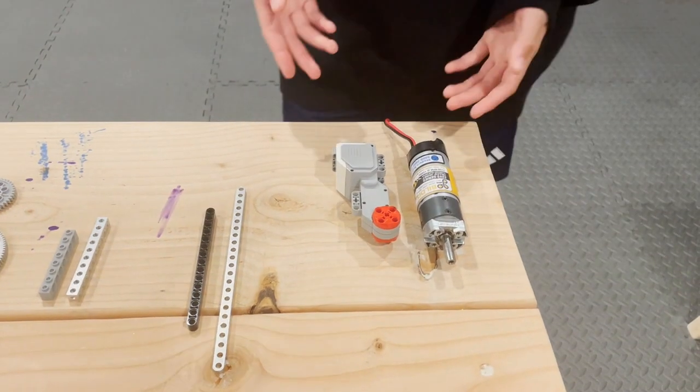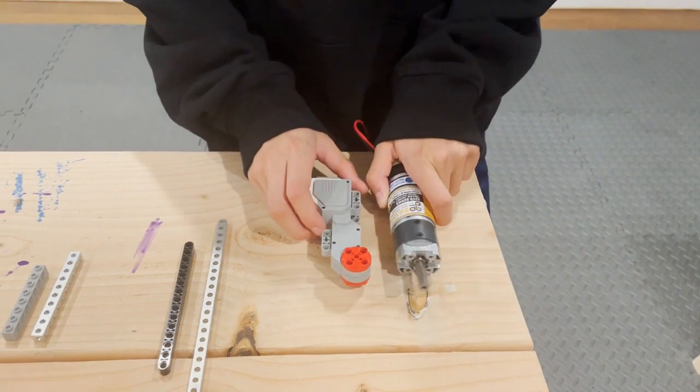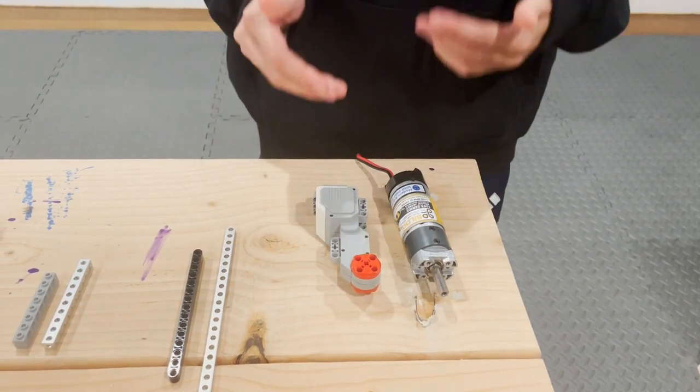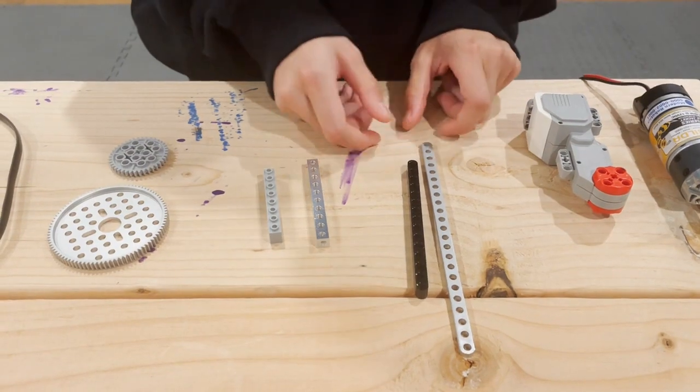First off are motors. This one is an FTC motor and this one is an FLL motor. They look quite different but they both serve the same purpose, powering things. Then there are the beams.